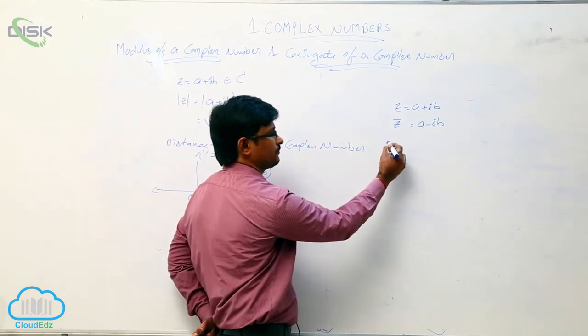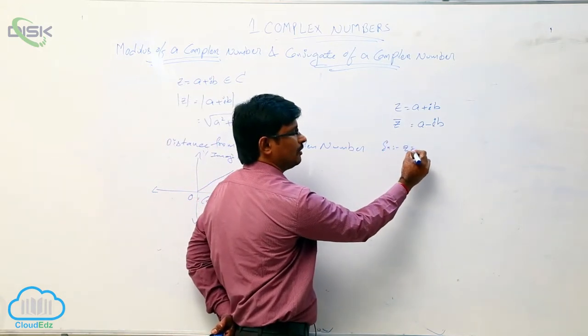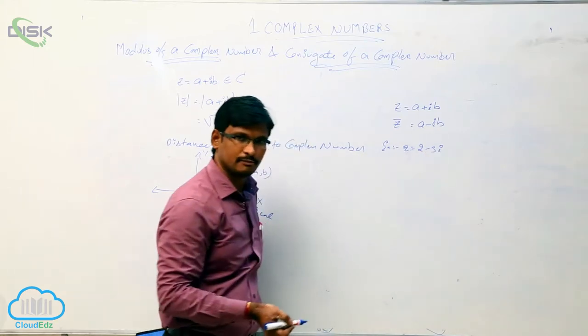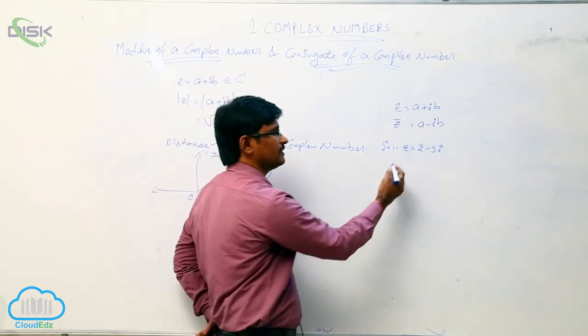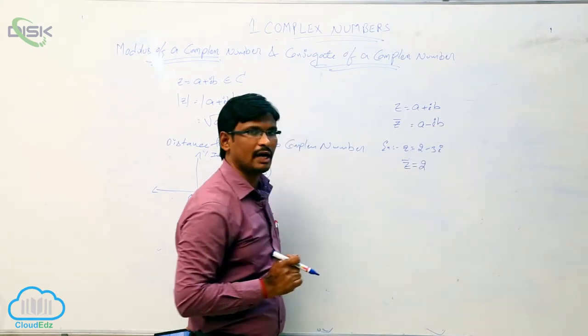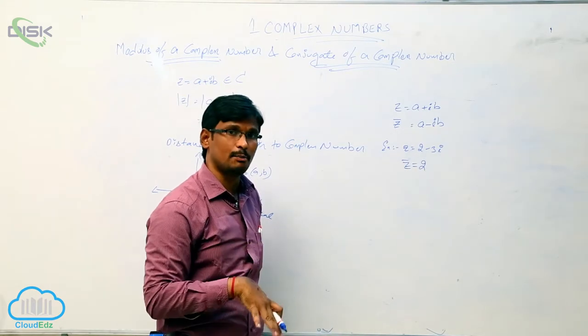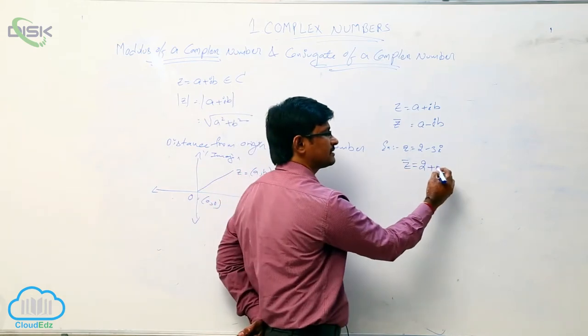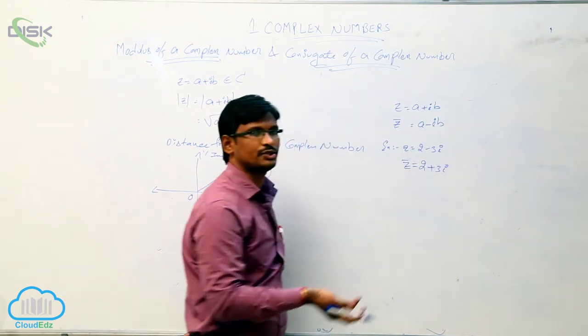For example, if z equal to 2 minus 3i is one complex number, what is the conjugate of this one? That is 2. Here the imaginary part is minus 3. What is the opposite of minus 3? Plus 3i. This is the conjugate.